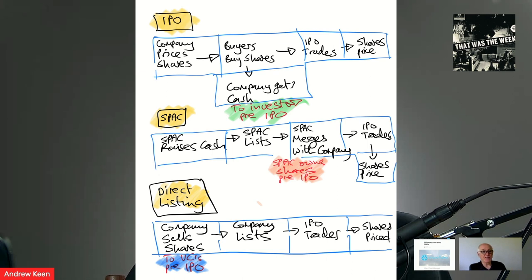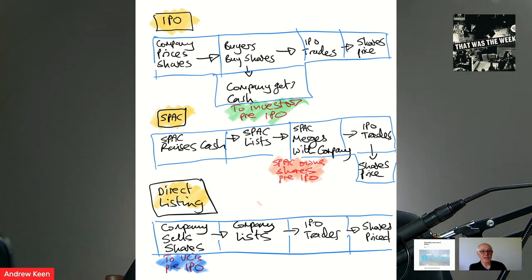So Chamath is essentially disintermediating Morgan Stanley — is that correct? And he's also disintermediating growth-stage venture capitalists. In a direct listing, the company sells shares to venture capitalists before the IPO, then the company lists without raising money, and the VCs hold shares prior to the IPO — they're the ones that make money if the price goes up. The difference between IPO, SPAC, and direct listing is essentially who gets to own shares before the IPO.